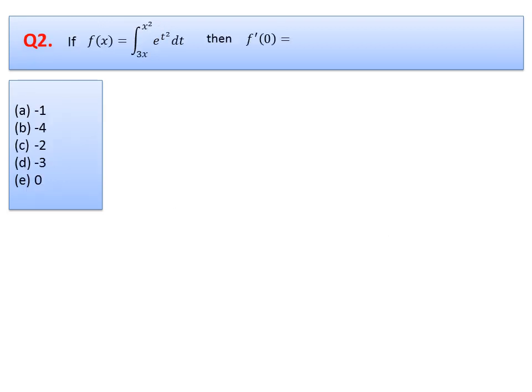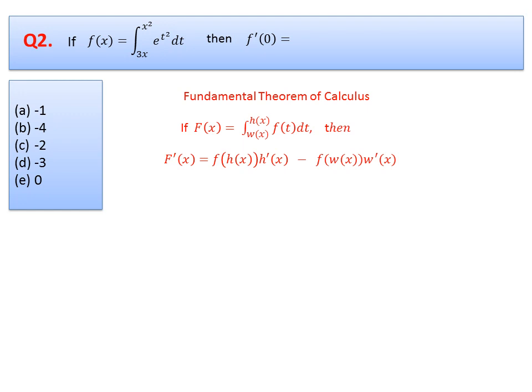Question 2: we have a function in terms of an integral and we need its derivative at 0. By the Fundamental Theorem of Calculus Part 1, we replace the t variable with the upper limit and multiply by its derivative, minus the lower limit multiplied by its derivative. The upper limit is x squared, lower limit is 3x. Plugging in 0, the first term vanishes and we get minus 3. Option D is correct.